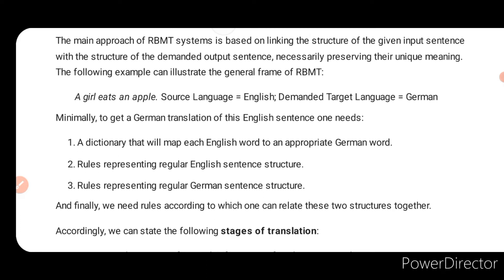In simple words, if you have a sentence 'A girl eats an apple', the source language is English and you want to convert it to German. First, the dictionary maps English words to German words. Number two, rules — English sentence rules are pre-defined. Number three, German sentence structure. Then you can use English sentences to produce output in German language.